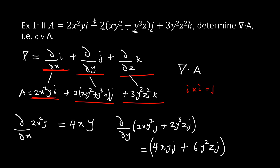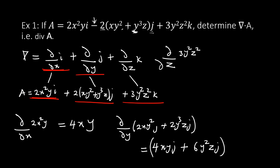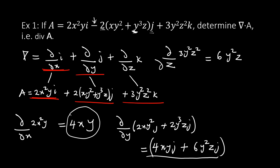For the third term, we differentiate 3y²z² with respect to z, which gives 6y²z. So now we have our three values: 4xy from the first, −4xy − 6y²z from the second, and 6y²z from the third. Joining these three together, we have our divergence of a.